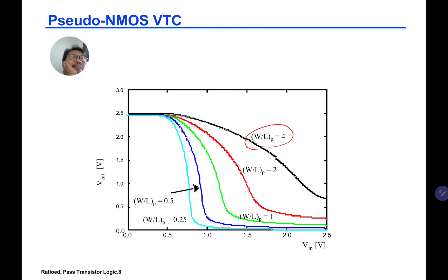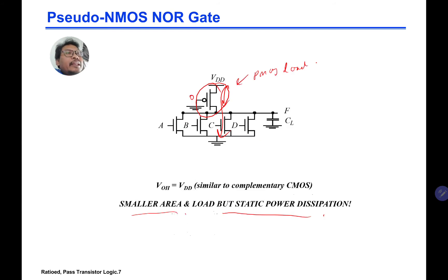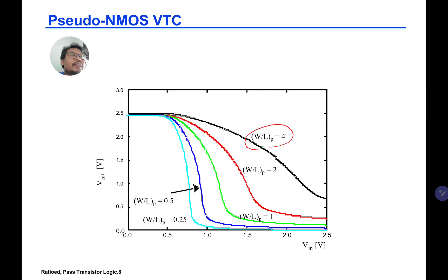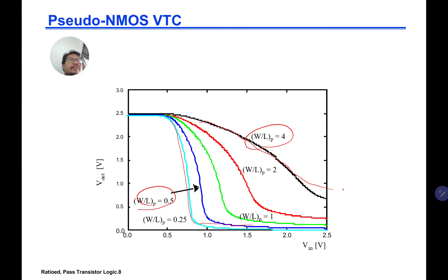If you make the size big — for example W/L·P equals four — you have a high constant current all the time. When the circuit tries to discharge, it discharges slowly because you have a high current charging at the same time. That gives a slow transition on Vout. However, if you make W/L small, you have a smaller current and can discharge faster. But the noise margins are not symmetrical, and there are speed trade-offs depending on the size.